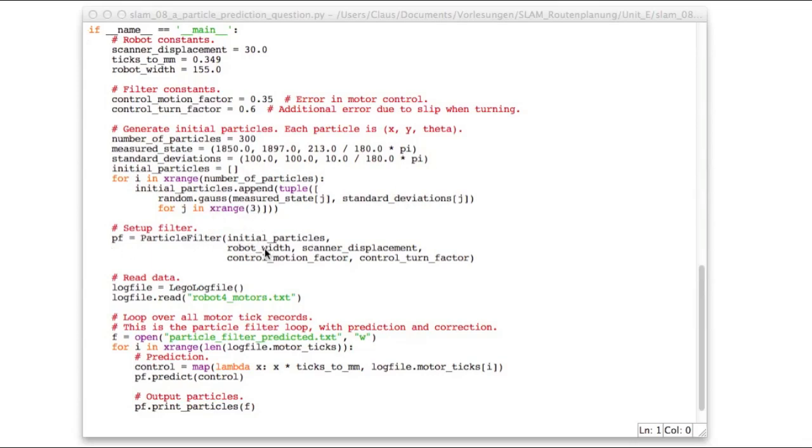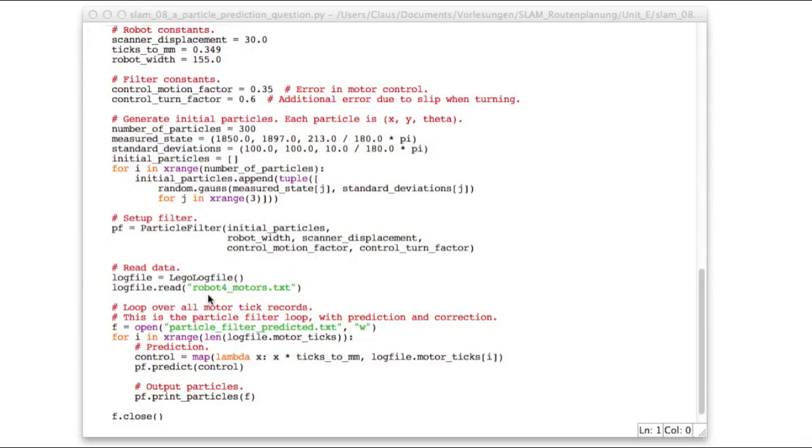So after that, I have 300 particles, and I hand them over to the particle filter class, together with all those constants. And now down here is the main loop. It reads all control data, and then loops.